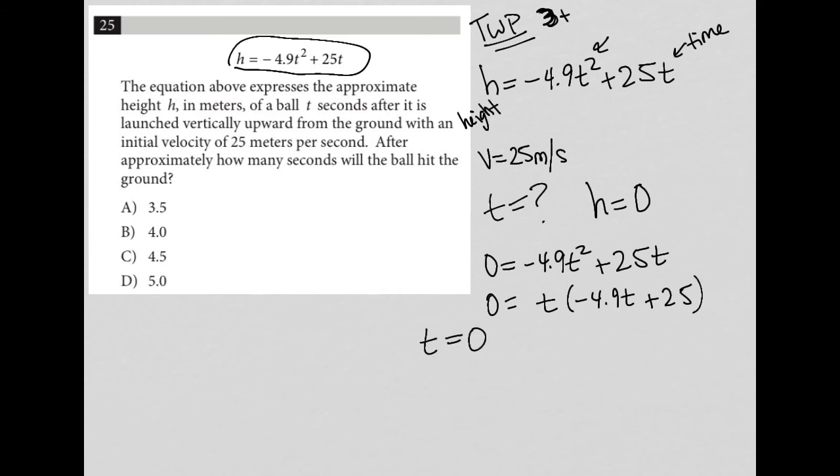negative 4.9 T plus 25, which means that either T is equal to zero, which makes sense. The ball is at its lowest point at the start, at the starting point right before it's launched up. Or negative 4.9 T plus 25 is equal to zero. This is going to be the one that gets us our answer.